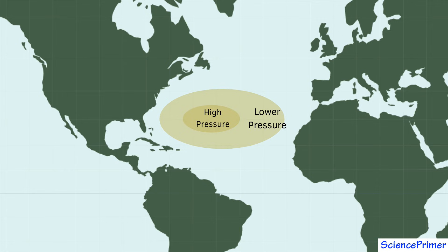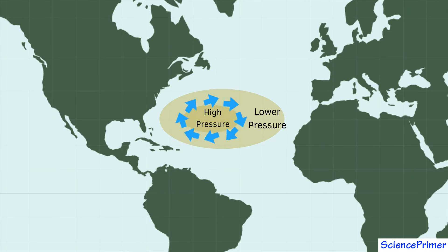The pressure gradient acts like the hill in the example with the ball, generating a force that pushes water down the gradient away from the center of the hill. Since the elevation difference is small and is spread across a large distance, the pressure gradient force is weak, creating conditions for geostrophic flow to occur. So rather than moving down the gradient, water flows along lines of equal pressure around the hill instead of down it.